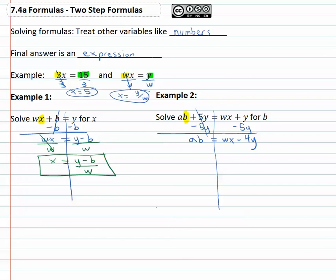Still trying to solve for b. Well to get the b alone, we need to get rid of the other variable a that's multiplied. So we'll divide both sides by the a, and we get b is equal to this fraction wx minus four y over a.